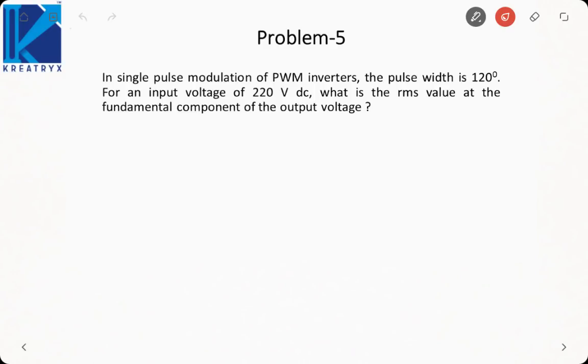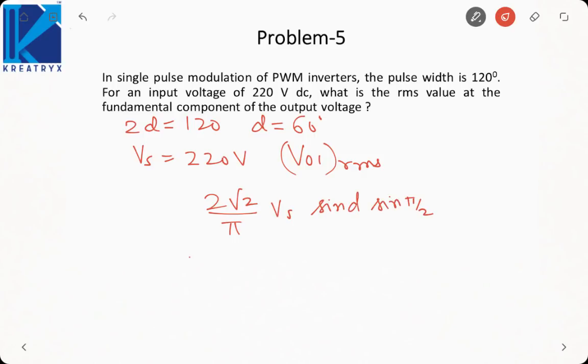In next problem it is saying in single pulse modulation of PWM inverter pulse width is 120 degrees. So 2D is 120 degrees which implies D is 60 degrees. Now it is saying input voltage of 220 volt DC. We need to find V01 RMS. It is actually equal to 2 root 2 by pi Vs into sin D sin pi by 2. That will become 2 root 2 by pi, Vs is 220, sin D is sin 60, that is root 6 by pi times 220. That is 220 into 0.78, root 6 by pi comes out to be 0.78, that is 171.6 volt.